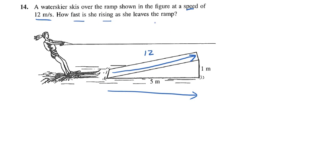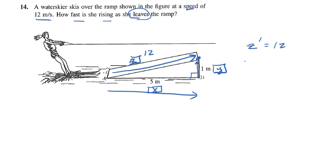How fast is she rising when she leaves the ramp? At this exact moment, how fast is she rising up off the ground? We need variables here, and we're probably going to need a third variable to connect them, because this looks like a right triangle — I'm thinking Pythagorean theorem. So let's make this X, this Y, and this Z. Z prime is the rate of change as the skier leaves the ramp, and that's going to be 12. Y prime is what we want to find — the rate at which she is rising off the ramp.